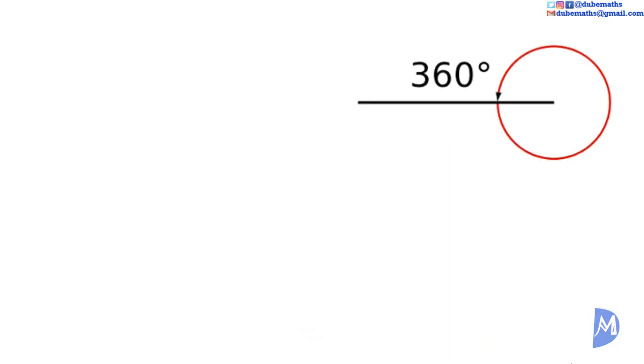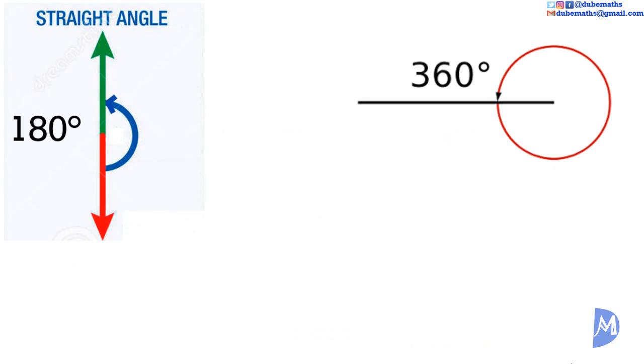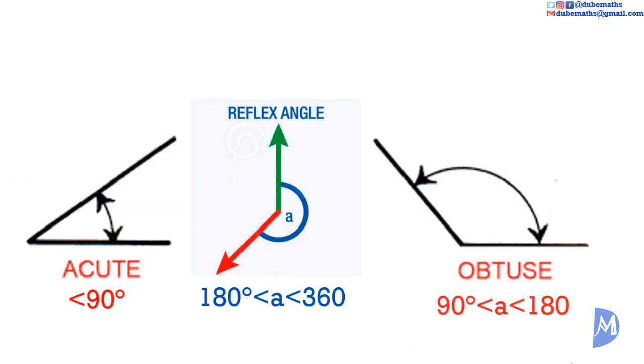A straight angle has an angle of 180 degrees. A right angle has an angle of 90 degrees and is represented by a special symbol, a square at the vertex. An angle less than 90 degrees is referred to as an acute angle.